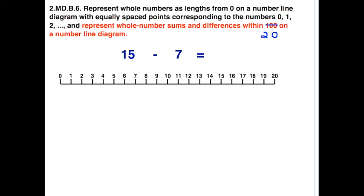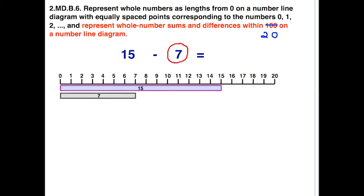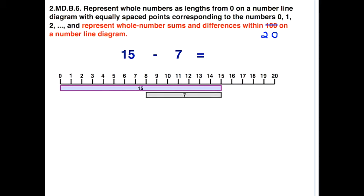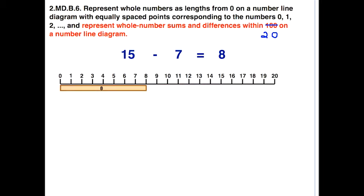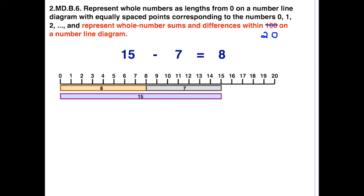Let's take a subtraction example. We need the strip that's a length of fifteen — that's our beginning point. We need the strip that's length seven, but since we are subtracting, we move it to where we start at fifteen and go seven to the left. This shows how much we take away, and what's left is a distance of eight. To double-check, take the eight and seven strips and lay them end-to-end — we do, in fact, have a total distance equivalent to the strip of length fifteen.